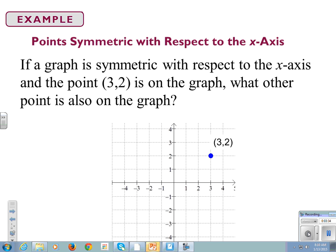If the graph is symmetric with respect to the x-axis and the point 3, 2 is on the graph, what other point is also on the graph? 3, negative 2 is also on the graph.